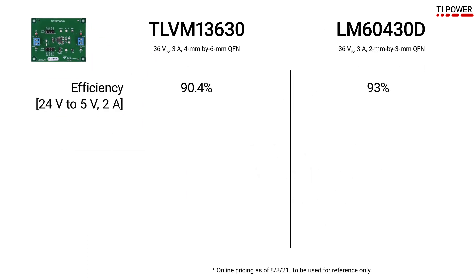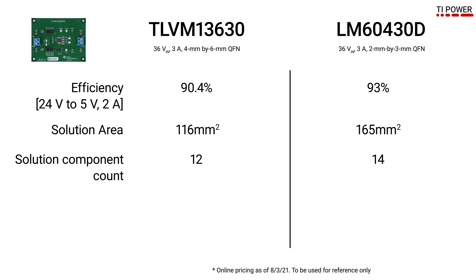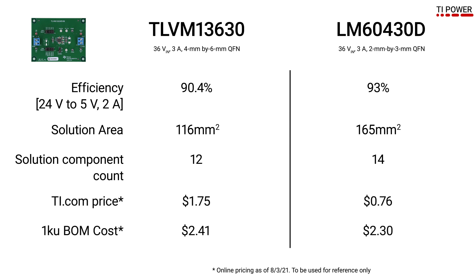In terms of performance, the LM60430 is about 2.5% more efficient, but the module is about 30% smaller and requires 2 fewer external components. In terms of IC price, the module is about $1 more expensive, but the complete BOM is only 10 cents or less than 5% higher. So the module-based solution is still slightly more expensive, but it's pretty close to the same 1K Uwebench cost of the converter solution.